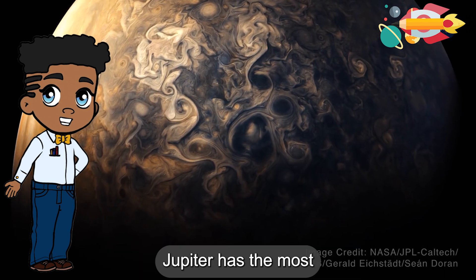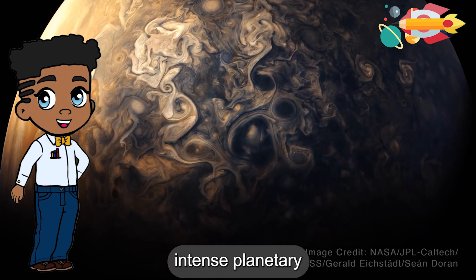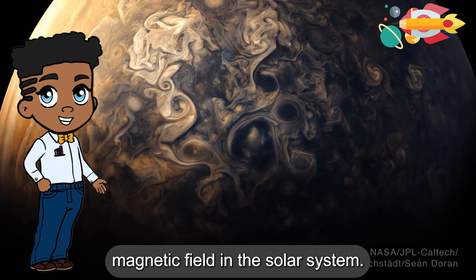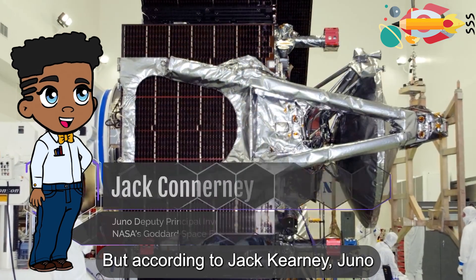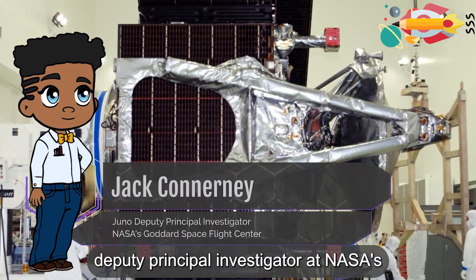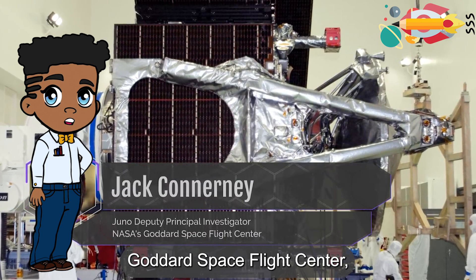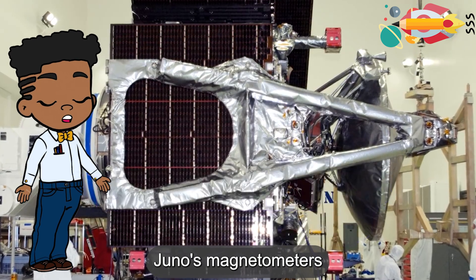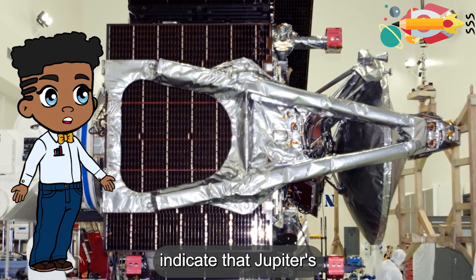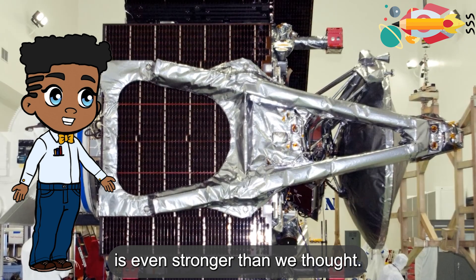Astronomers have long known that Jupiter has the most intense planetary magnetic field in the solar system. But according to Jack Curnerny, Juno deputy principal investigator at NASA's Goddard Space Flight Center, Juno's magnetometers indicate that Jupiter's magnetic field is even stronger than we thought.